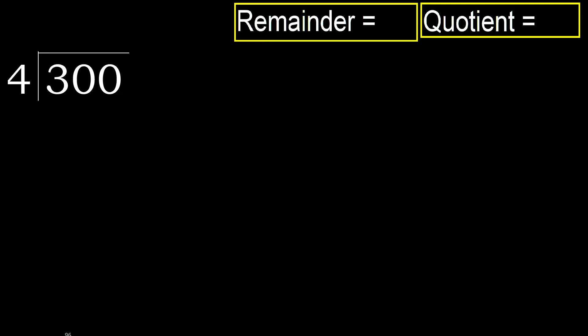300 divided by 4. 3 is less, therefore next. 30 is not less, therefore with 30. 4 multiplied by which number is nearest to 30.